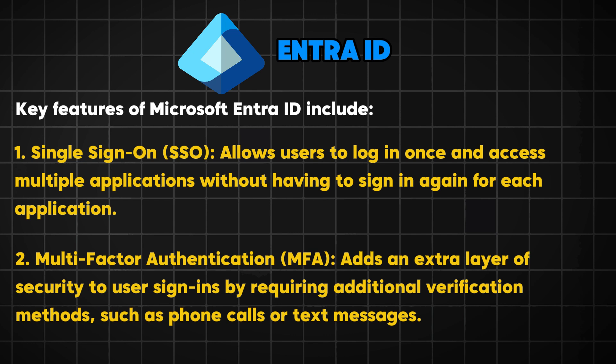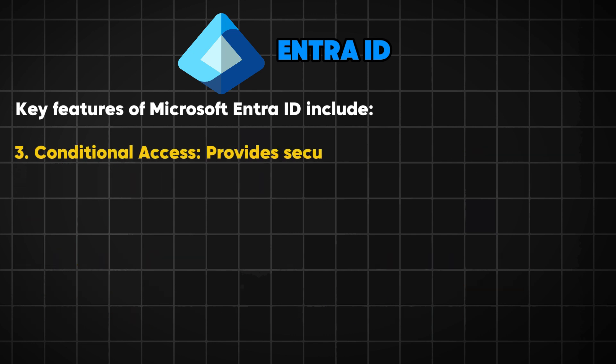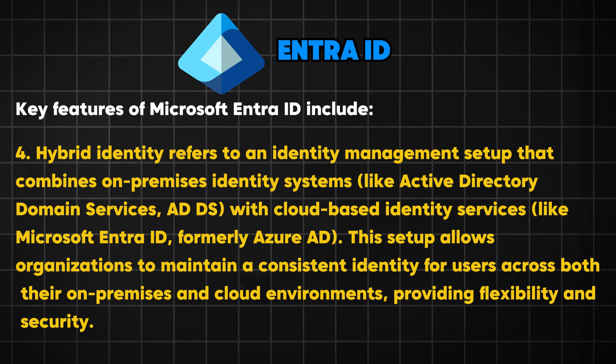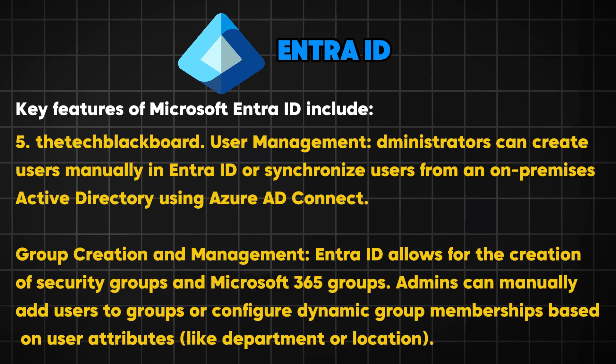Multi-Factor Authentication adds an extra layer of security by requiring additional verification factors such as a code sent to a phone number or a biometric scan. Conditional Access enforces specific conditions for accessing resources based on factors like location, device, or user risk level, enhancing security and compliance. Hybrid Identity supports connecting on-premises resources, allowing organizations to manage identity across both cloud and on-premises environments. Microsoft Entra ID also provides the base for user and group management.